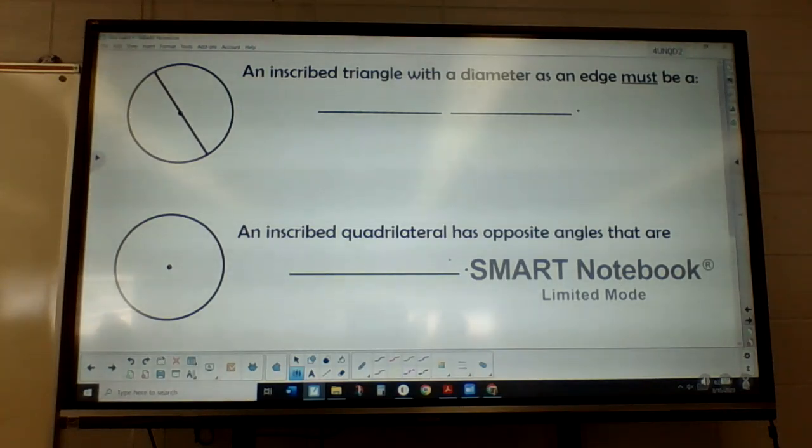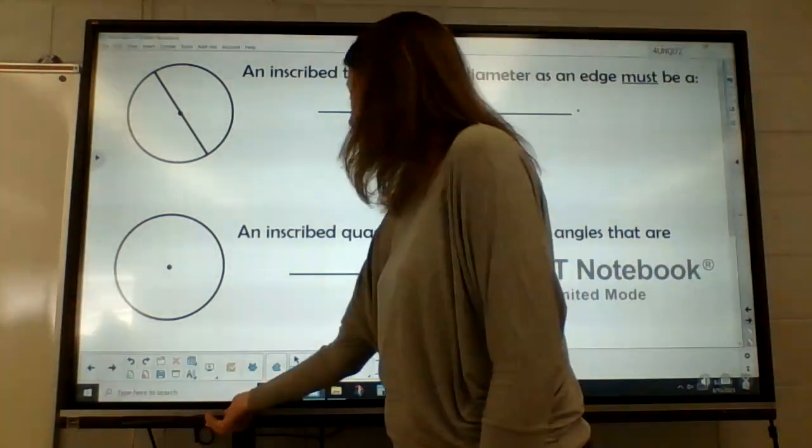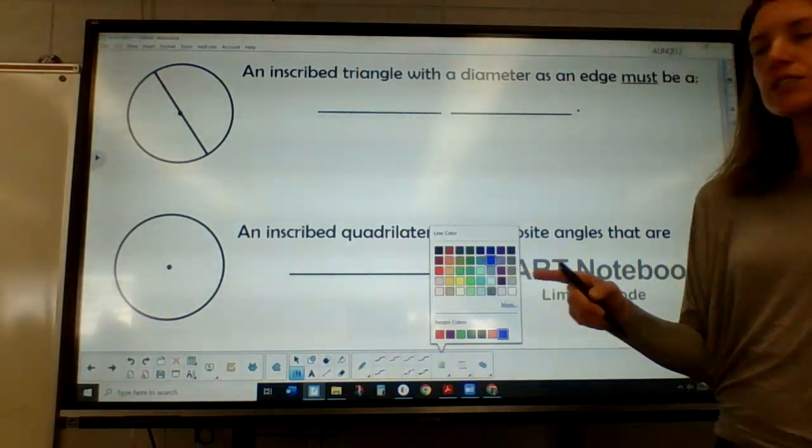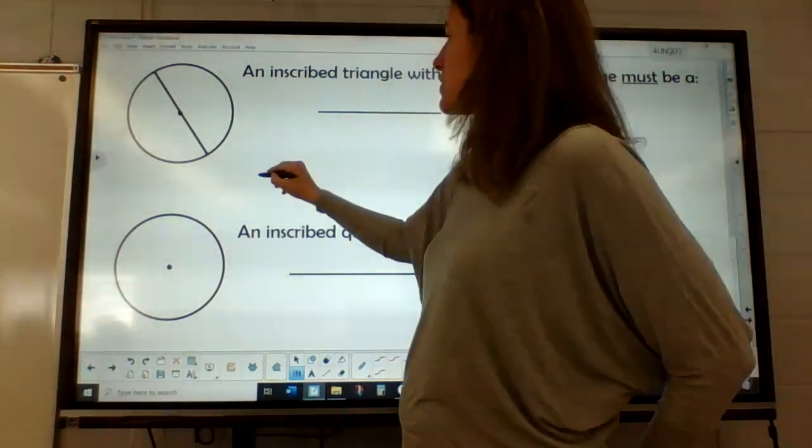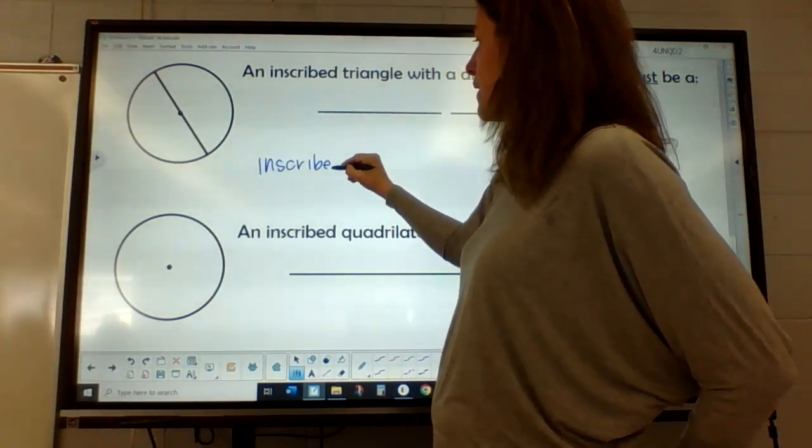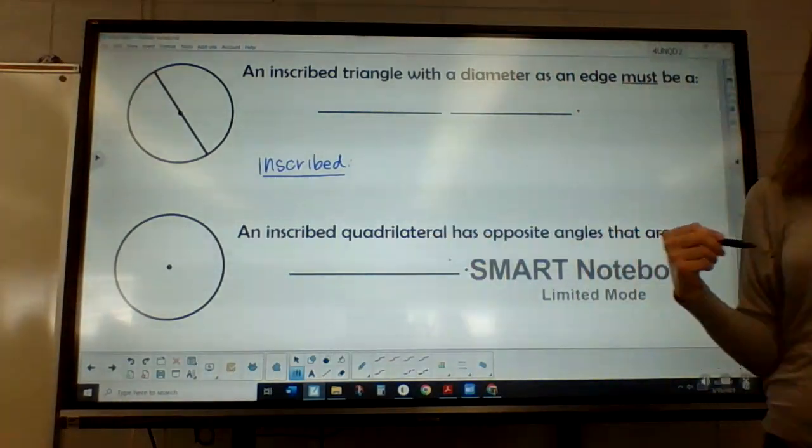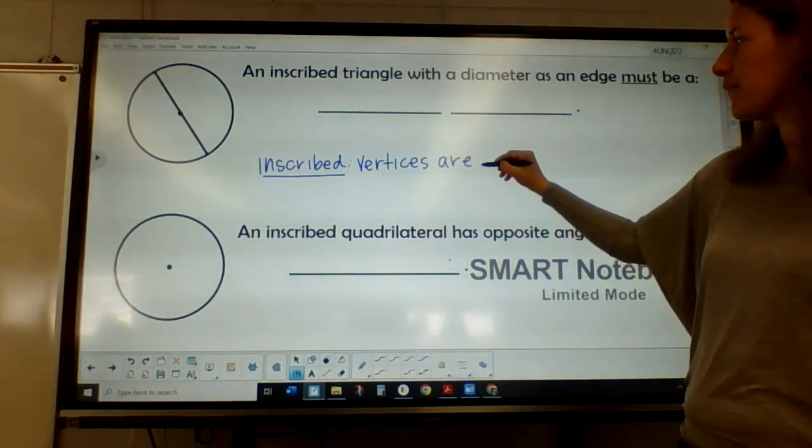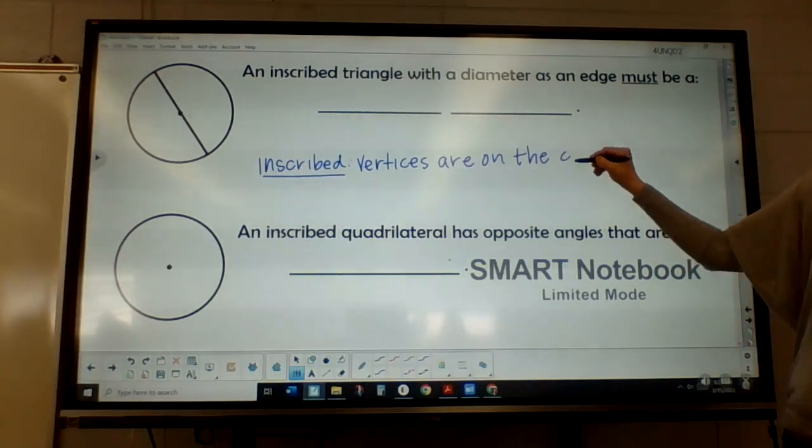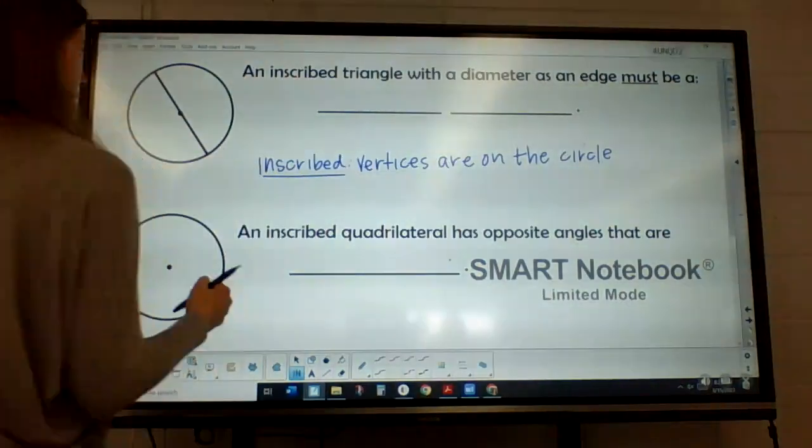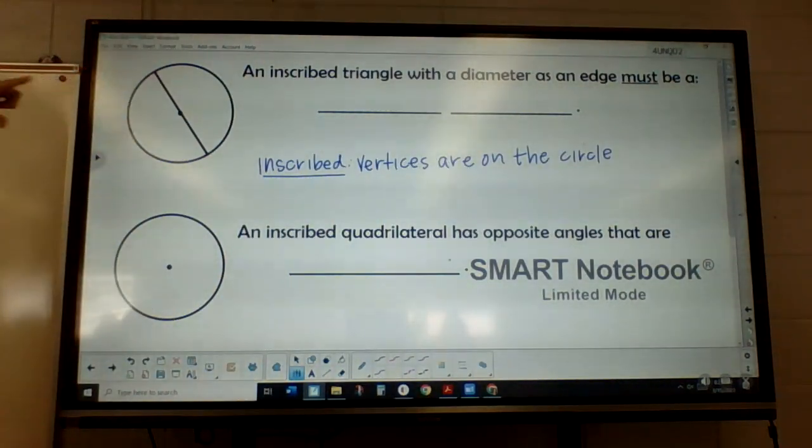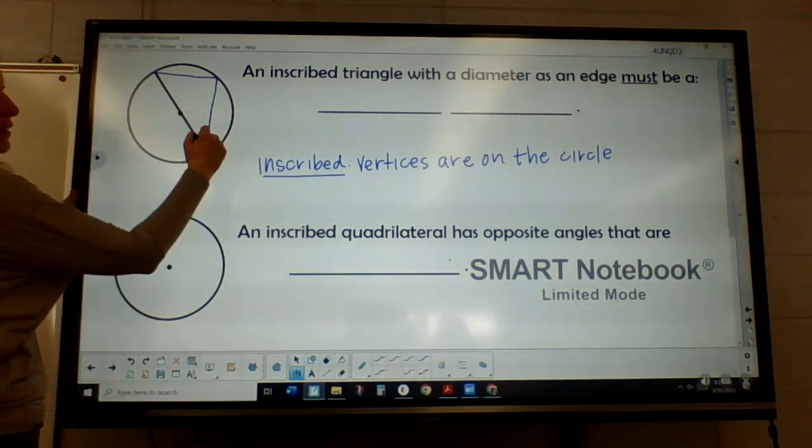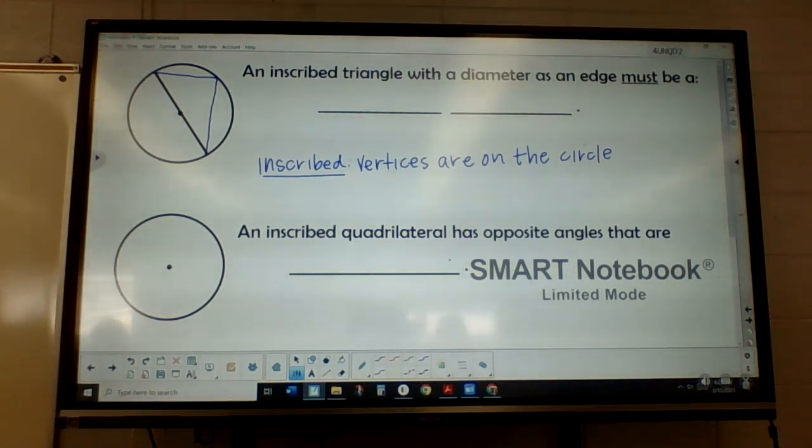All right. So it says an inscribed triangle with a diameter as an edge must be. And so I'm going to draw this. So an inscribed triangle. So the word inscribed, we kind of used it already. Inscribed just basically means that the vertices are on the circle. So if I draw a triangle with the diameter as the edge, I'm just going to draw a triangle. And you guys can draw whatever triangle you want. It doesn't have to look exactly like mine, but it's got to be inscribed. So that means the vertices have to be on the edge.